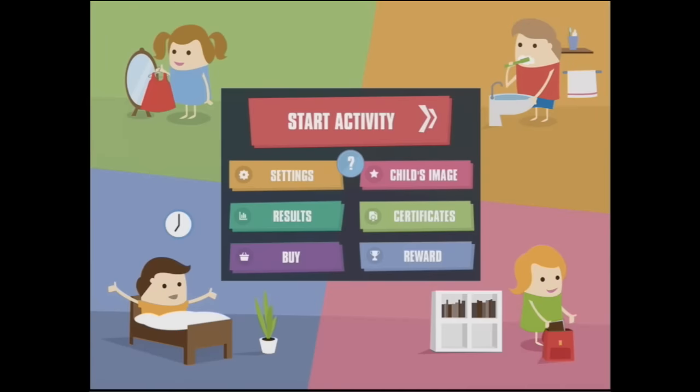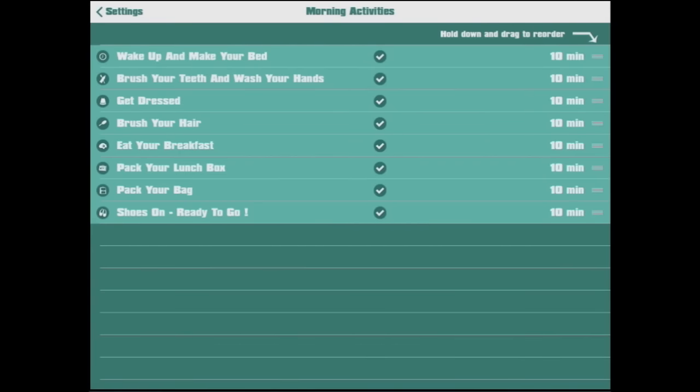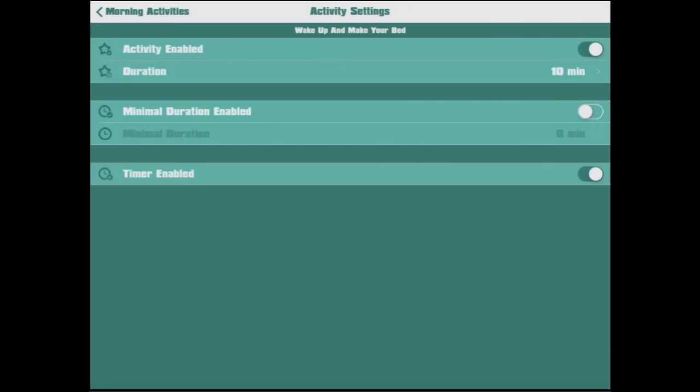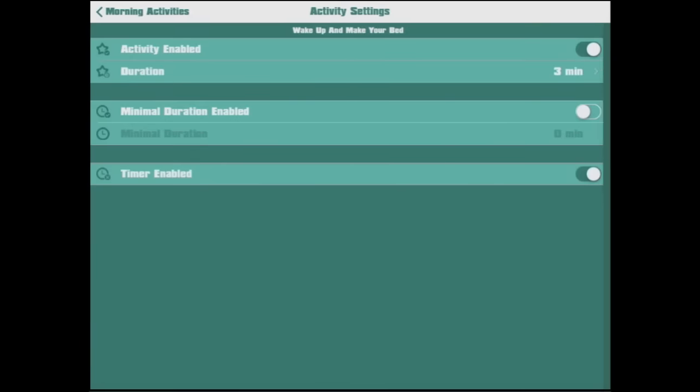Now we've got all the way through our sequence of events, let's go back and have a look under settings and see what we can do. So morning activities here, we can toggle it on or off, we can set its duration. So if we don't want making our bed to take so long, we can set it at three minutes and we can turn a minimum duration on or off. I don't think we need that. And timer enabled, well we can just turn the timer off altogether and they can just press next as well.